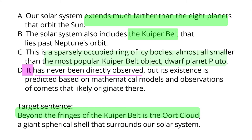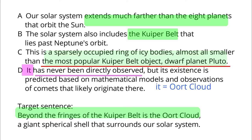Clearly, something is not the Kuiper belt because it was directly observed, as indicated by the most popular Kuiper belt object, dwarf planet Pluto. So it must refer to the Oort cloud.